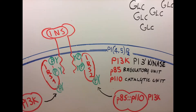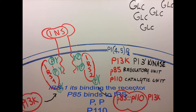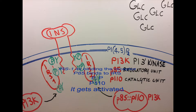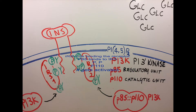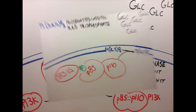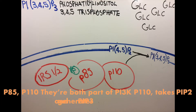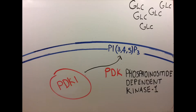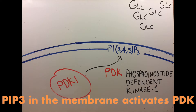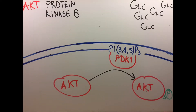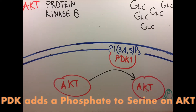Sending glucose to the sub-membrane. IRS-1 is binding the receptor. P85 binds to IRS, P110 gets activated. P85 and P110 are both part of PI3K. P110 takes PIP2 and generates PIP3. PIP3 in the membrane activates PDK. PDK adds a phosphate to serine on AKT.